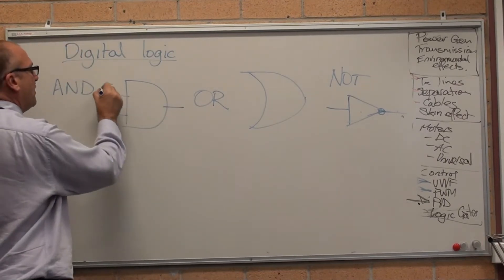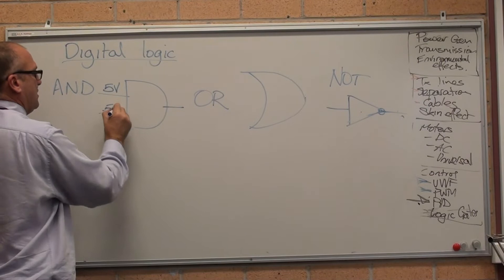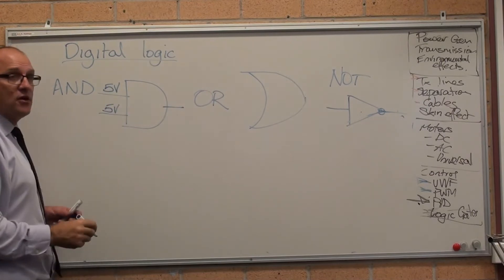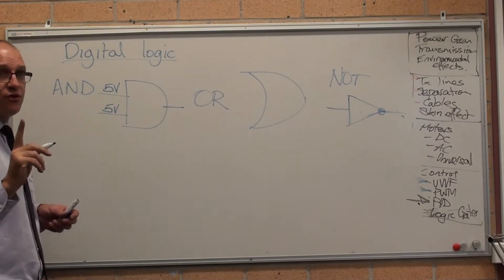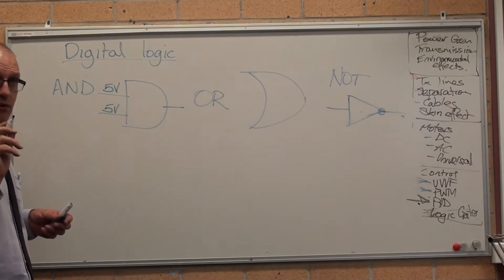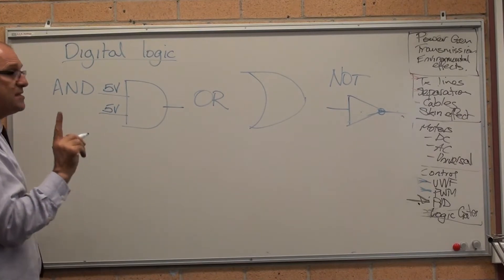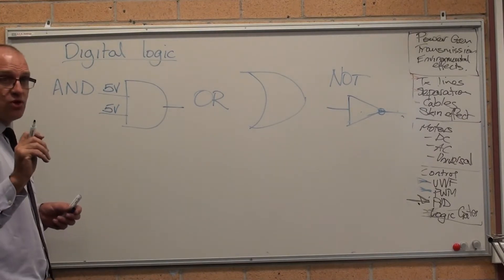An AND gate. If there is 5 volts here and 5 volts there — this is what they call a truth table, or a logic table, which is in the examination multiple times.